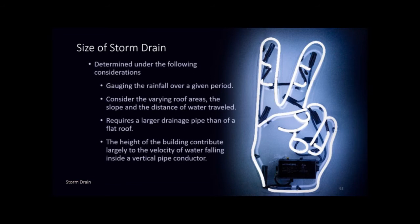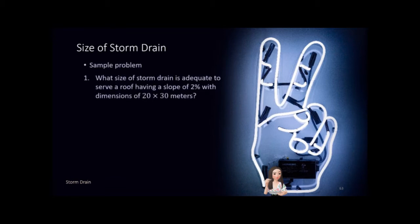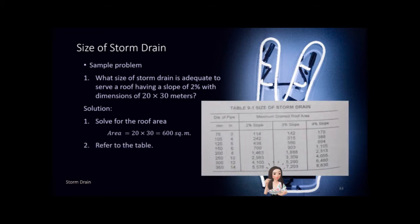In determining the size of the storm drain, we follow set considerations. Sample problem: What size of storm drain is adequate to serve a roof having a slope of 2% with dimensions of 20 by 30 meters? First, solve for the roof area: 20 multiplied by 30 equals 600 square meters. Next, refer to the table under 2% slope. Since 600 square meters falls under the 700 column, the diameter of pipe required is 150 millimeters or 6 inches.